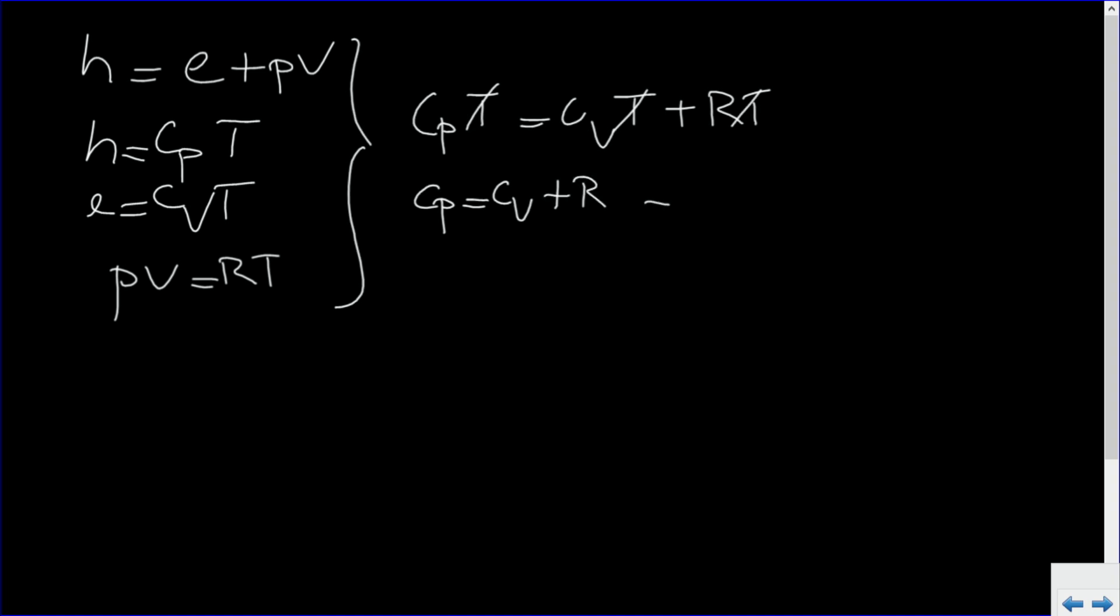Or if you write it differently, CP minus CV is R. We also defined gamma is CP divided by CV. So CV is CP divided by gamma. And if we combine these two, then it follows that CP is gamma R divided by gamma minus 1.